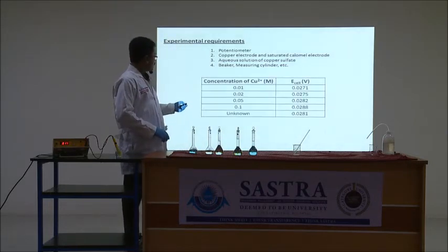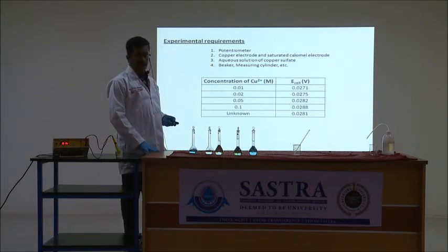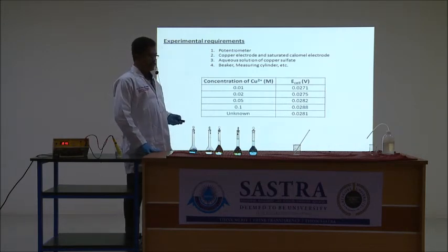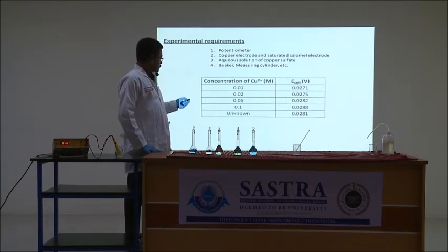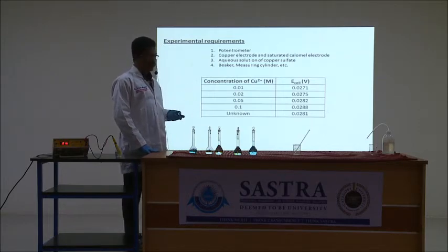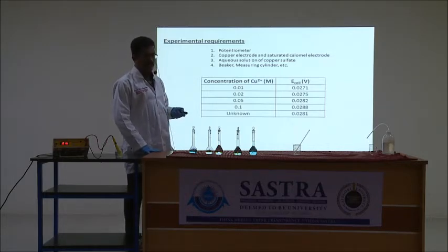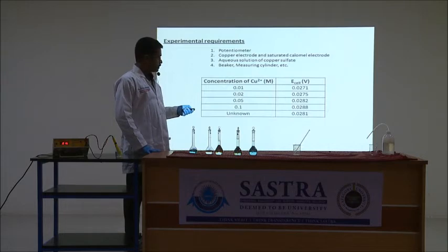So you will get the cell potential (E-cell) values for all the concentrations. Now there are two ways: you can directly plot the log of concentration of copper sulfate against the E-cell value, or you can calculate the single electrode potential of copper and from there find the concentration. We choose the second method.